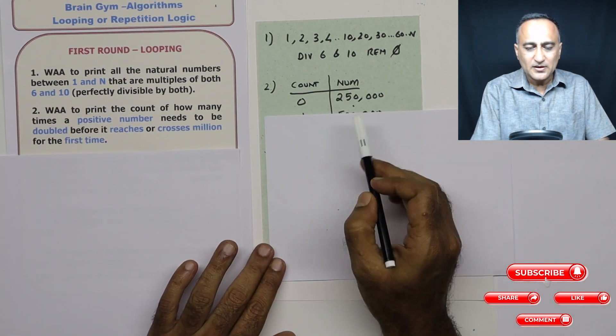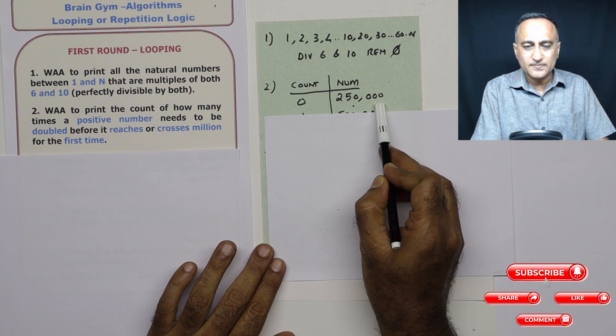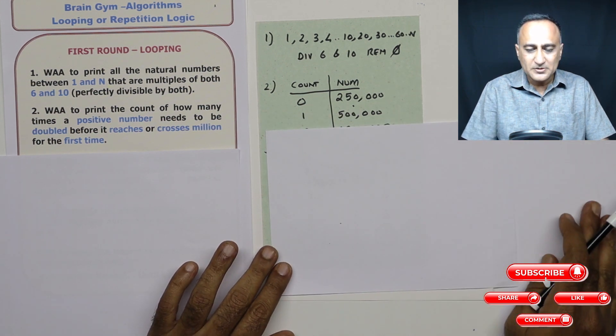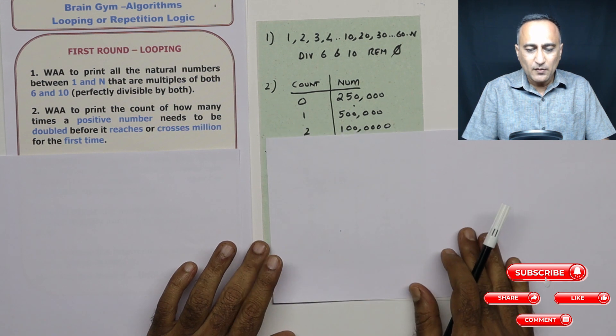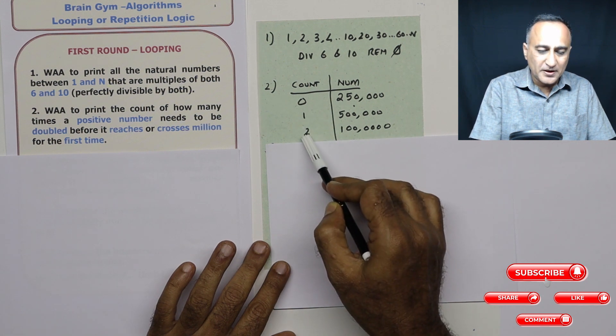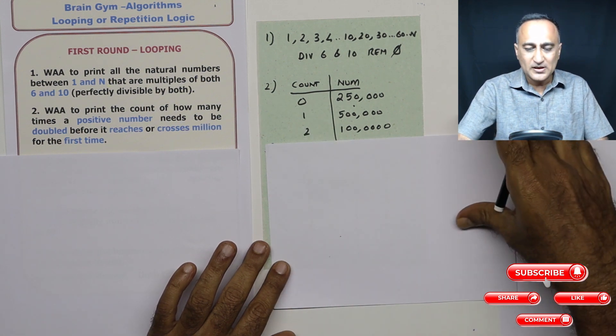Suppose I have a number called 250,000, the count is zero. I double it, the count becomes one. Now I double it, the count becomes two, but the number has also reached one million. So I am going to print this value of count on the output screen. Now let me come to the last problem. This is a really interesting one.